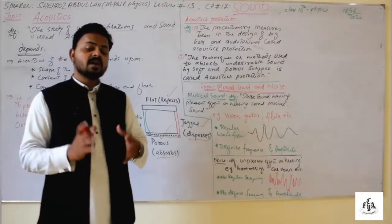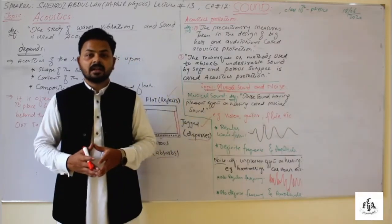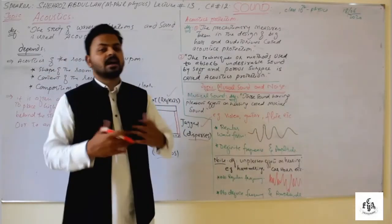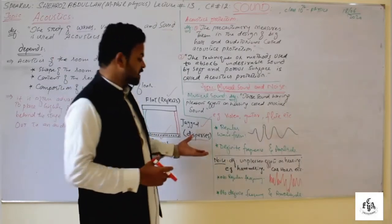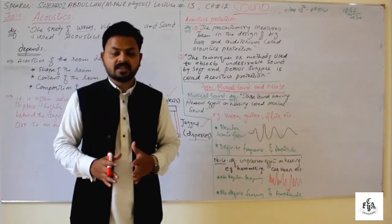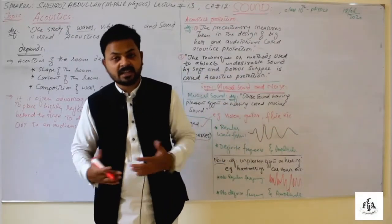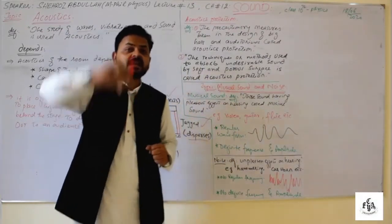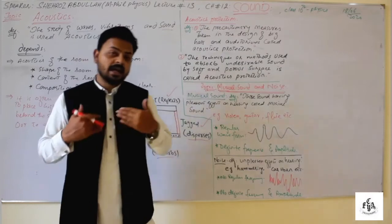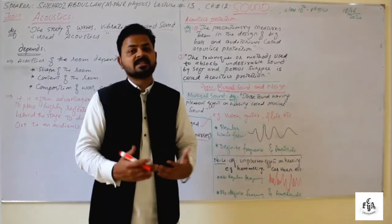Noise consists of those sounds which have an unpleasant effect on hearing. For example, a person shouting, hammering, or a car horn — these are all examples of noise. Noise has a lot of variation in frequency and amplitude, and there are sudden increases or decreases in frequency and amplitude of the vibration. That is why it looks bad to hearing — it has an unpleasant effect.